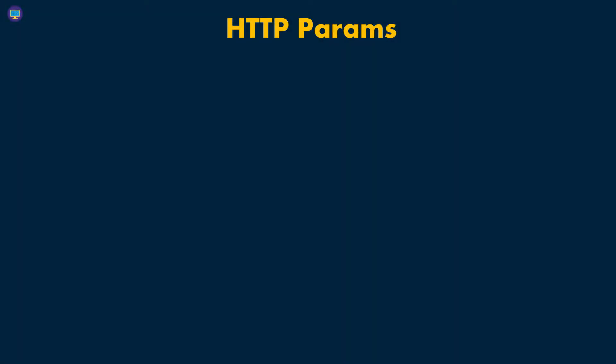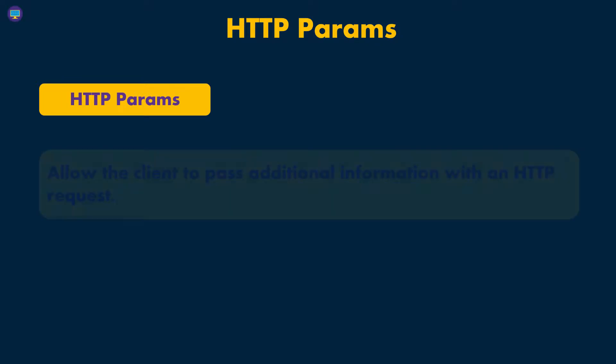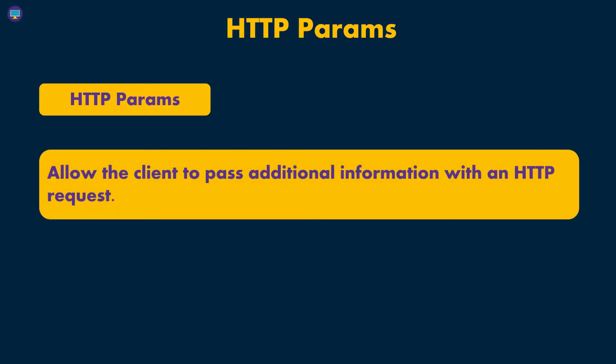Let's go ahead and look at HTTP parameters. HTTP parameters are sometimes called query parameters or request parameters. It's a way for the client to pass additional information with an HTTP request. You usually use them to pass in some filter parameter — for instance, page one and size 10 to specify to the server that you want the first page of some response and 10 items per page. Typically they're used for filtering the information that the server is going to send back to you.